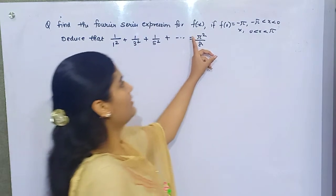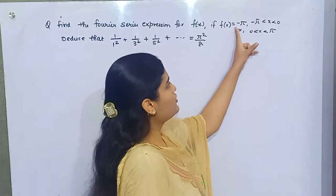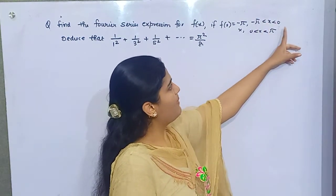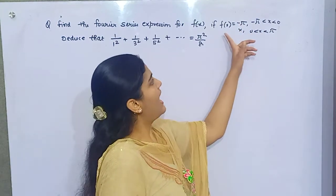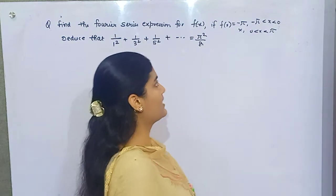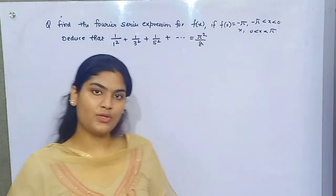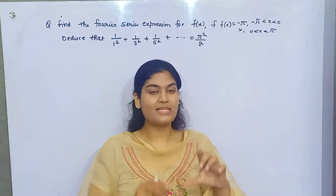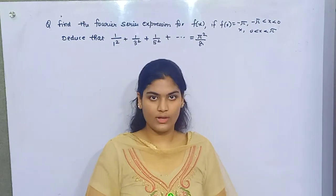Your function doesn't have only one value — it has two values for two different functions. If x is lying between minus pi and zero, then the value of the function is minus pi. And if x is lying between zero and pi, then the value is x. In that case, you need to split your minus pi to pi interval into these two intervals and integrate accordingly.